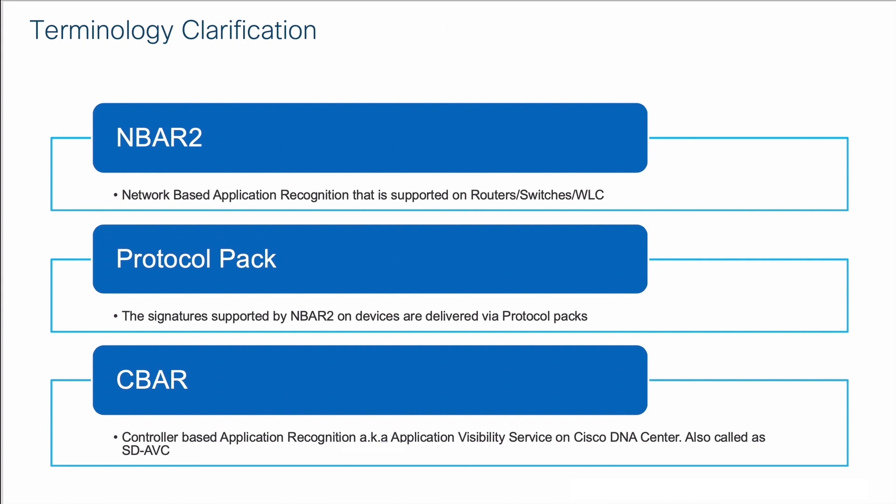The way application classification happens on our infrastructure today is using a technology called NBAR2, which runs on most of our routers and access points. NBAR2 uses various mechanisms like deep packet inspection, DNS-based heuristics, and it can also recognize some encrypted applications. It has about 1,400-plus signatures that are delivered using something called protocol packs. Each time there are new or enhanced signatures, they are delivered as protocol packs on all network devices.